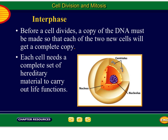Before a cell divides, a copy of the DNA must be made so that each of the two new cells gets a complete copy. Each cell needs a complete set of hereditary information to carry out life functions. How many chromosomes are in each cell? 46. So after mitosis, how many chromosomes does each one have? 23 — because they have 23 pairs, and your chromosomes come in pairs. So after mitosis there are 23, but then during interphase it copies them, so then there are 23 pairs again.